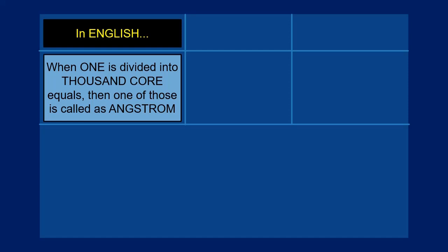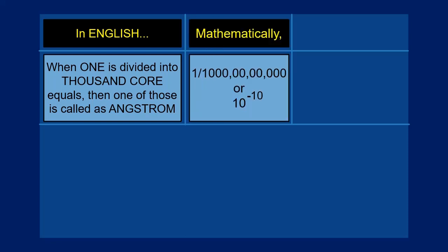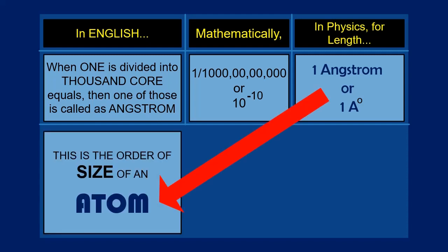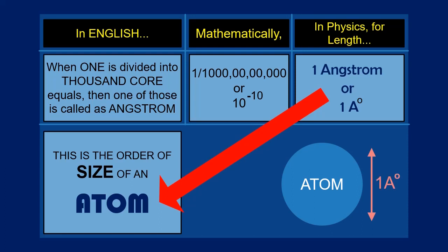When one unit is divided into 1000 crores equal units, after division, each one is called as angstrom. There are 1000 crores of such quantities. In mathematics, symbolically, we write each of them as one divided by one followed with ten zeros, or ten raised to the power of minus ten. In physics, it is written as one followed with a capital A with a degree symbol overhead. This is the order of the size of an atom — the size of an atom is approximately equal to ten raised to the power of minus ten meters. In physics, we call it as one angstrom unit.